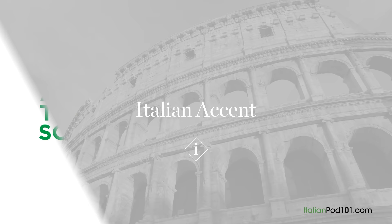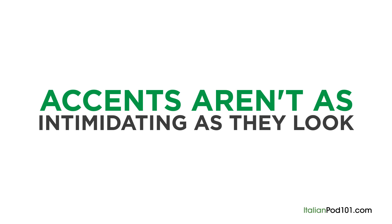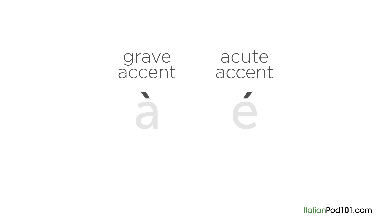An accent is a marker that is used to indicate some additional quality. Accents aren't as intimidating as they look — they actually help you more than anything. There are two types of accents used in Italian: the grave accent, which looks like a line falling from left to right, and the acute accent, which looks like a line rising from left to right.